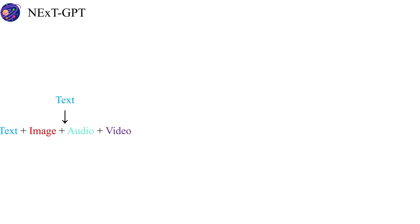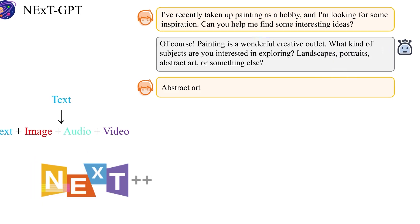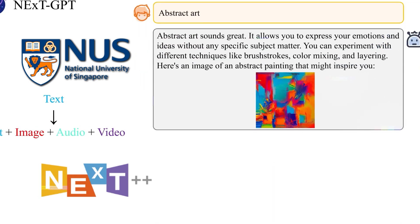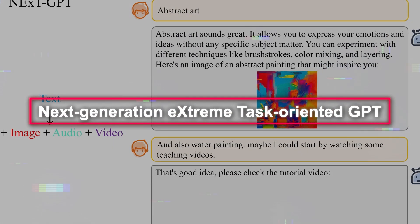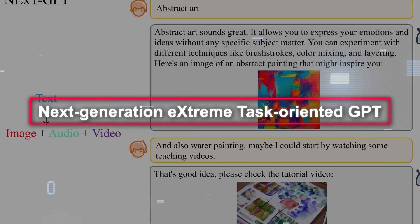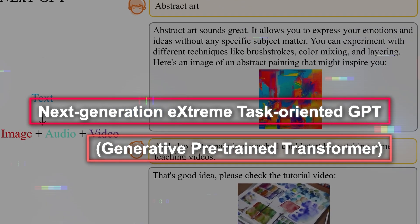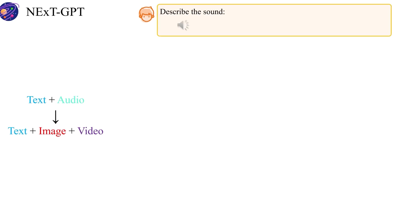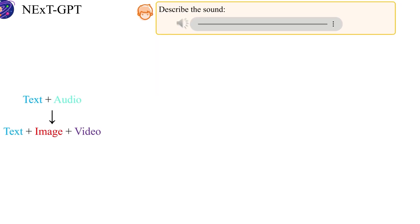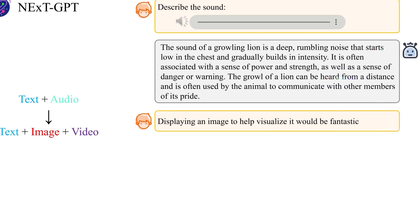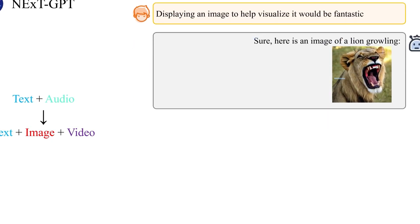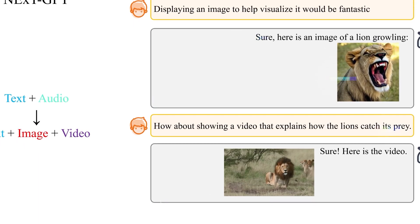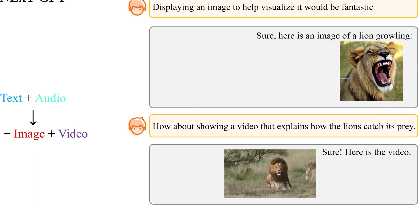NextGPT was developed by researchers from Next++, the School of Computing at the National University of Singapore. It stands for Next Generation Extreme Task-Oriented GPT — Generative Pre-Trained Transformer. It is an end-to-end, general-purpose, any-to-any MMLLM system that can perceive inputs and generate outputs in arbitrary combinations of text, images, videos, and audio. It's based on three main components: multimodal adapters, LLMs, and diffusion decoders.